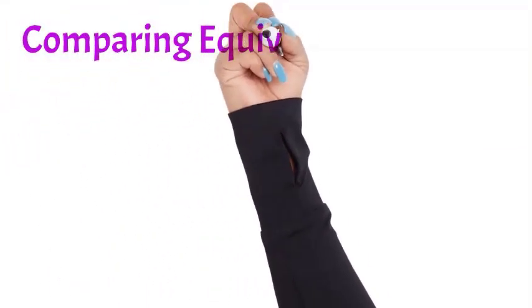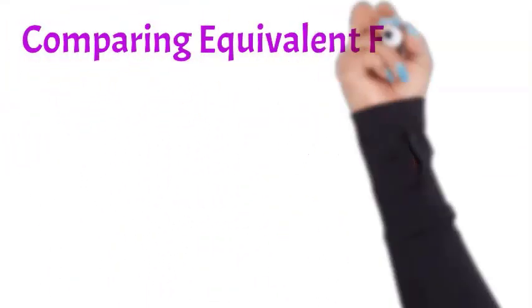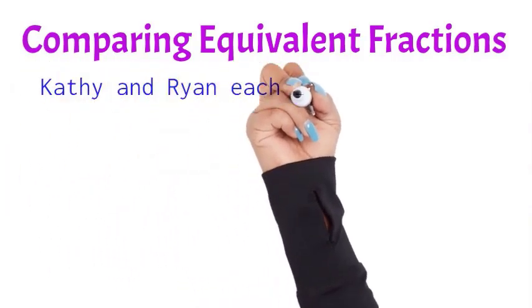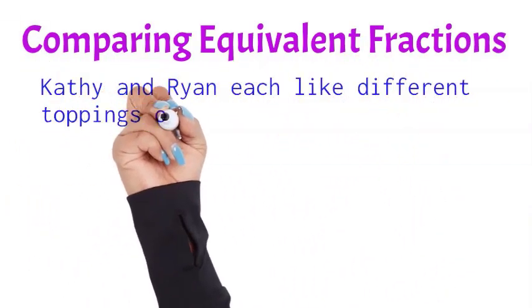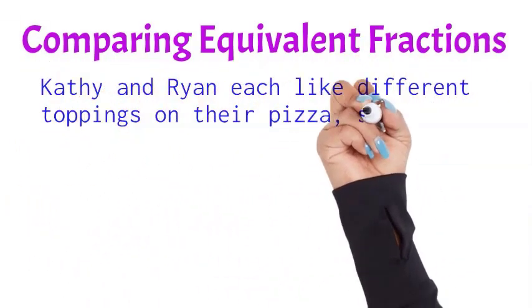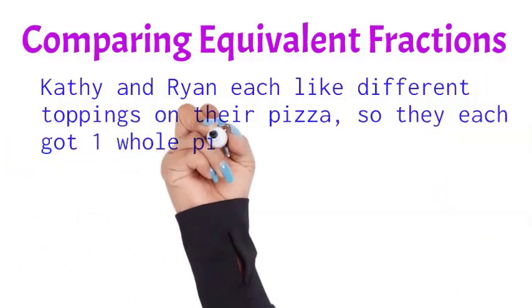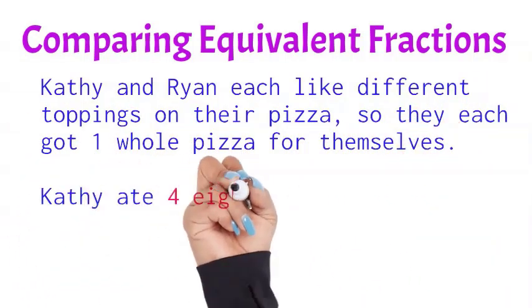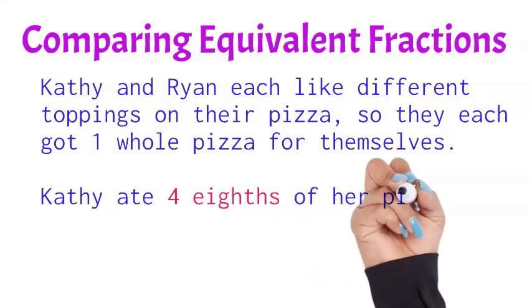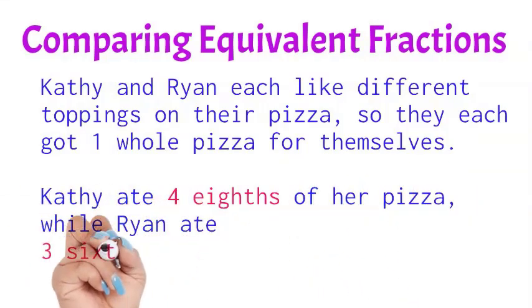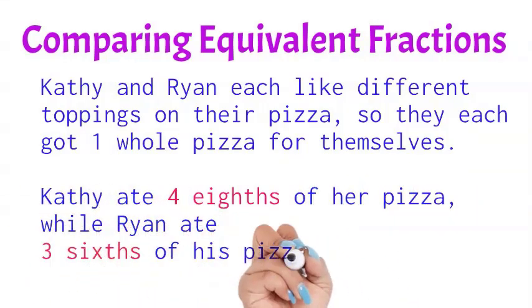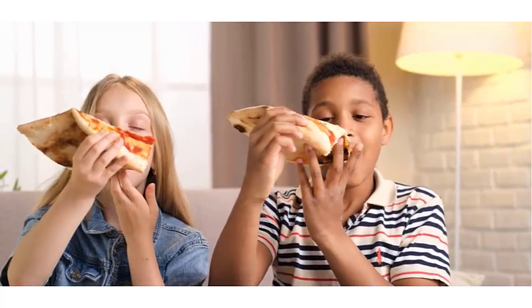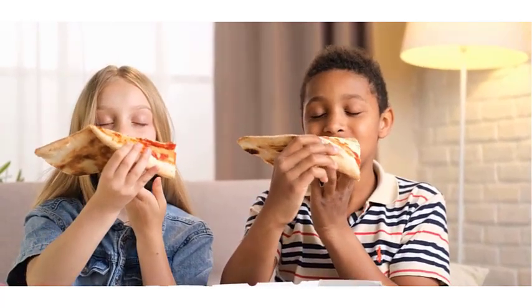Hello and welcome to another video where we will be learning about comparing equivalent fractions. Kathy and Ryan each like different toppings on their pizza, so they each got one whole pizza for themselves. Kathy ate four eighths of her pizza while Ryan ate three sixths of his pizza. Who ate more of their pizza? Let's find out.